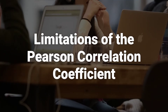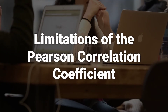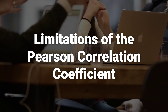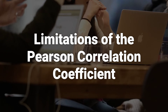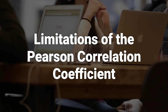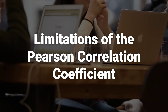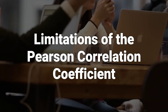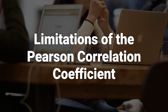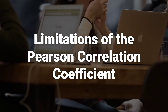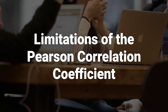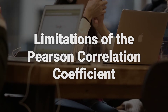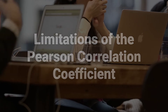The Pearson coefficient cannot imply causation, determine the amount of variation attributable to the independent variable, or describe the slope of the line of best fit. It also cannot assess nonlinear associations, sample data not subject to a normal distribution, or be used with outliers.